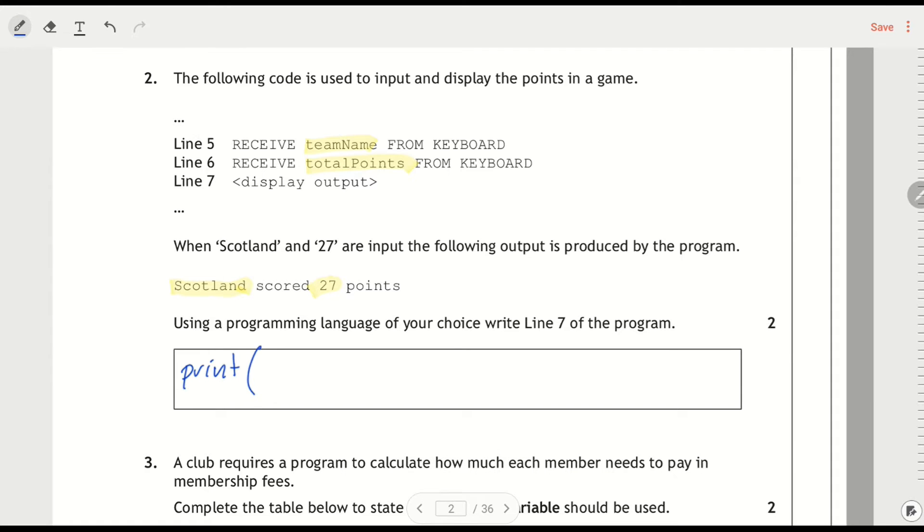So I've got my print statement already there for Python. I'll start off, it's going to start with team name. And then scored, now scored is going to go in speech marks, because that's not a variable. So that's literally the word scored.